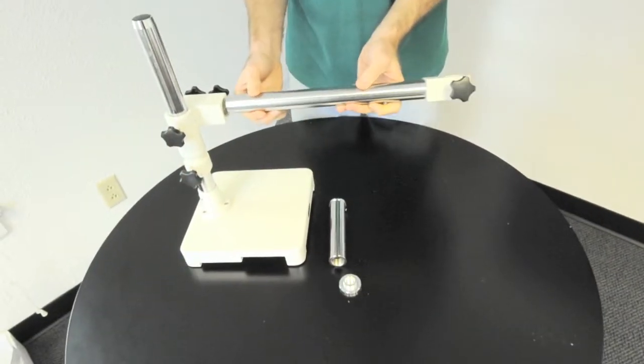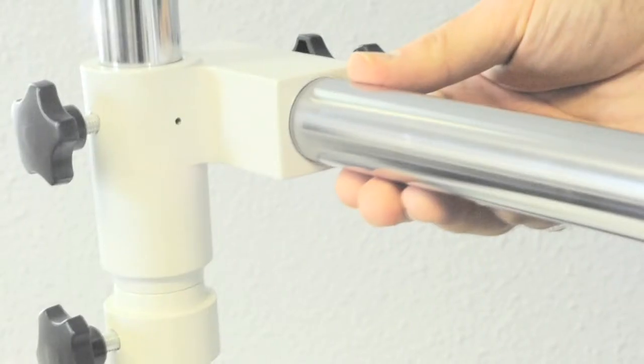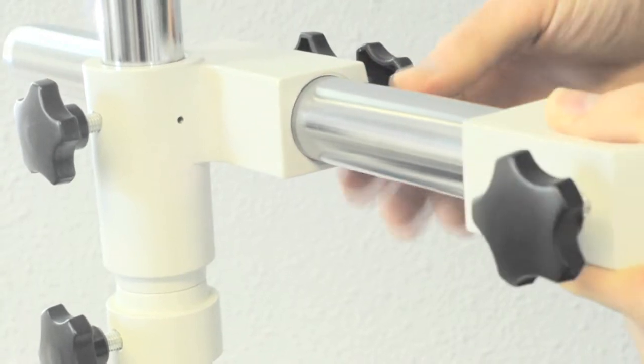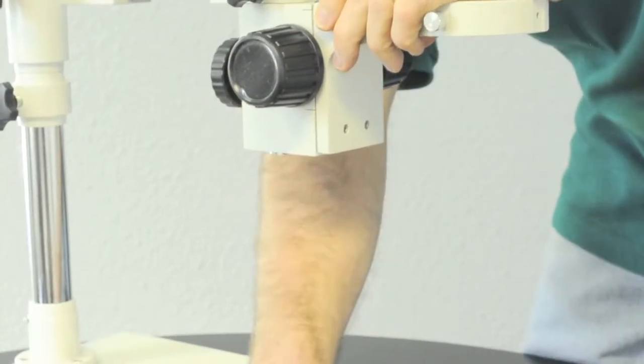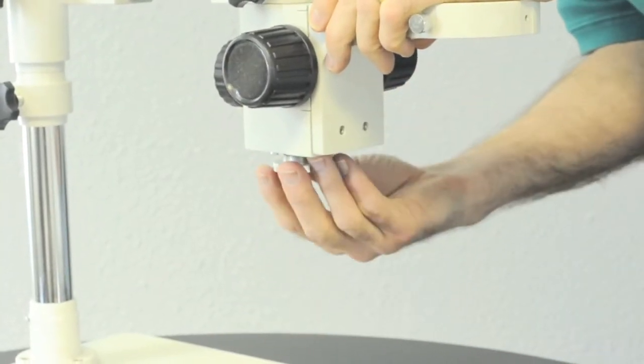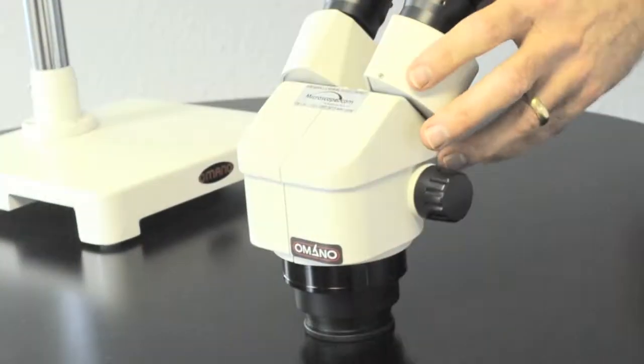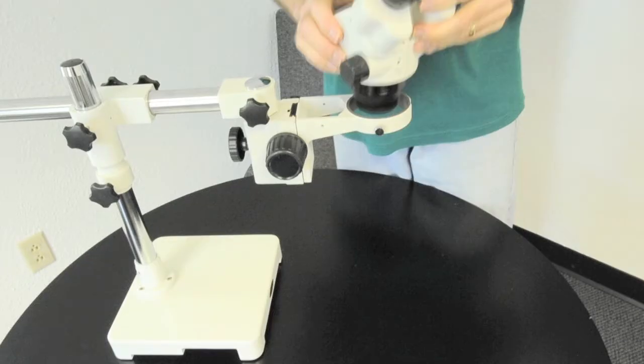Then the horizontal pole inserts into the attachment block. The hanging bar and focus block are then attached as shown. Place the microscope head into the focus block and tighten.